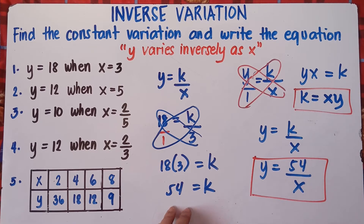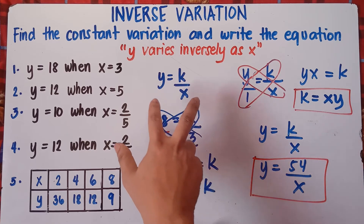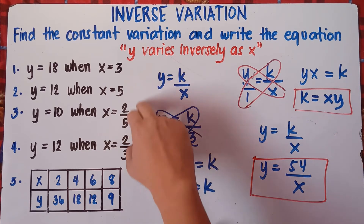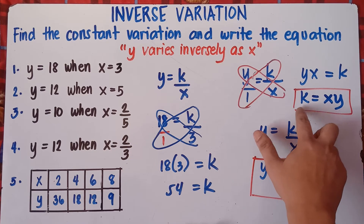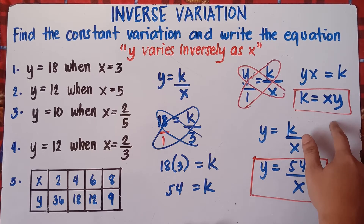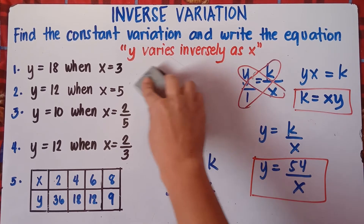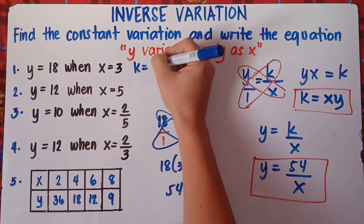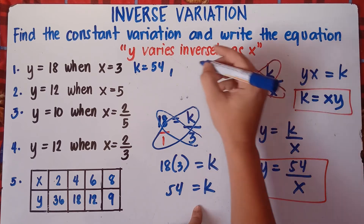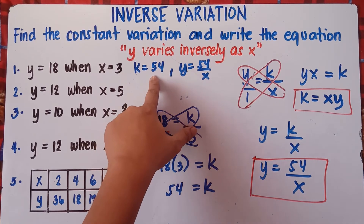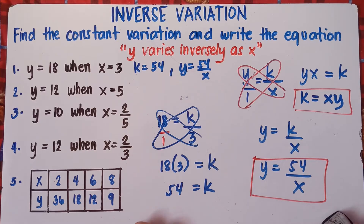If you have many examples — say the teacher gives you 10 questions — simply use the formula k equals xy to find the constant. It will be confusing to do cross multiplication every time for many problems. So once you have k, just substitute it into y equals k over x to write the equation. Our k is 54, and the equation is y equals 54 over x.